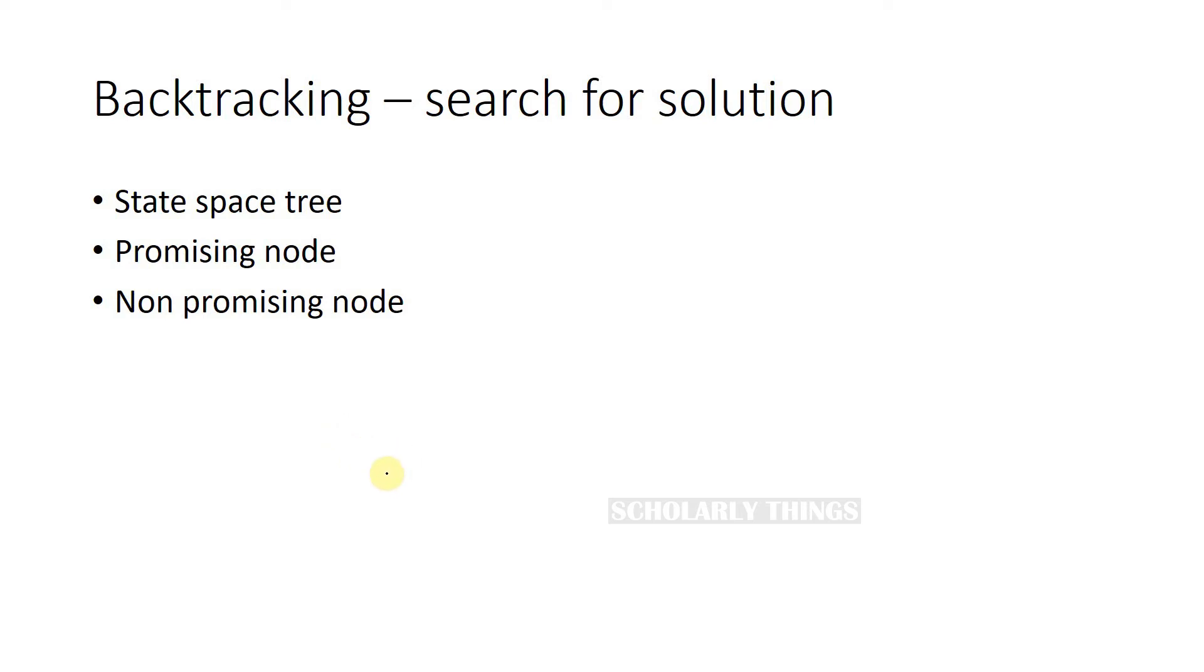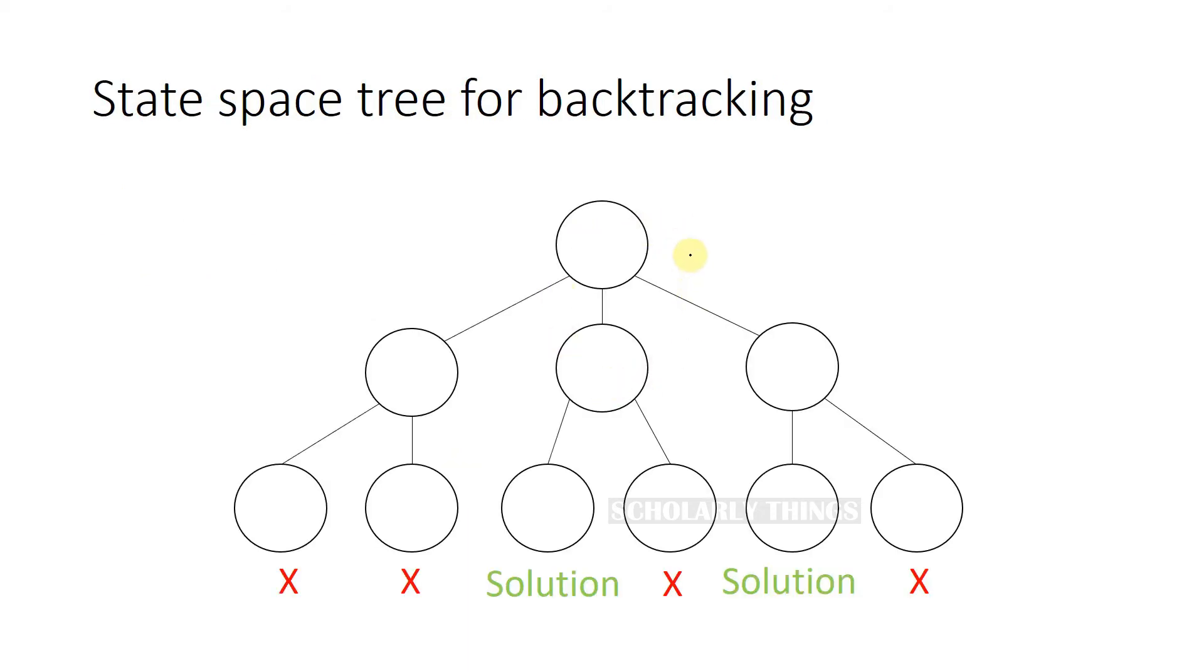The advantage here is that it saves a lot of time by not choosing to continue when a non-promising node is found. It just backtracks and goes on wherever there are promising nodes. This diagram represents a state space tree.